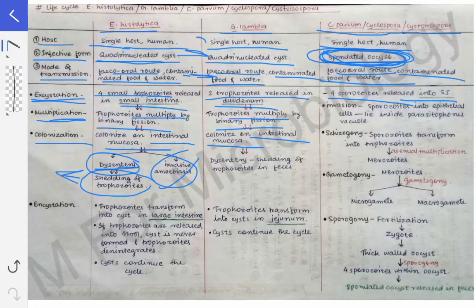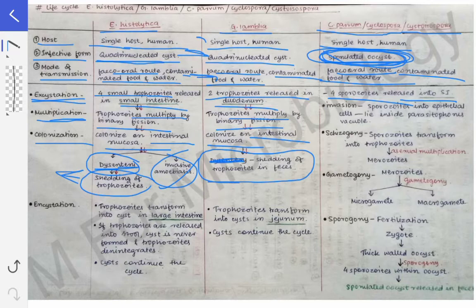In case of Giardia lamblia, it does not cause dysentery — it should be diarrhea, because it does not cause blood in the stool, it only causes diarrhea. Here also there occurs shedding of trophozoites in the feces.